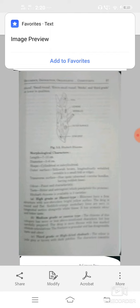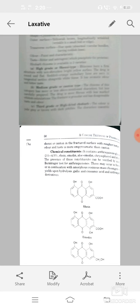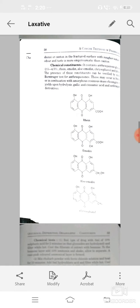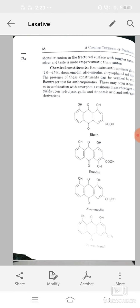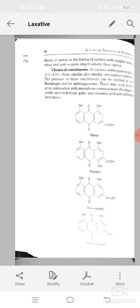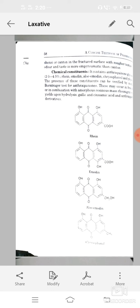Chemical constituents: it consists of anthraquinone glycosides 20 to 45%, rhein, emodin, aloe emodin or chrysophenol, physcione or other different Borntrager test for anthraquinone glycosides. They may occur in a free state.